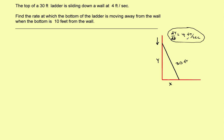The question is, what is the problem asking for? The question is asking for the rate at which the bottom of the ladder is moving away from the wall — that would be dx/dt, which is what we're solving for. A lot of times the hardest part of the problem is just drawing a picture and figuring out what you're solving for. I know the rate at which y is changing; I want to find the rate at which x is changing. So I've got to come up with an equation that ties y to x, and really the only equation you've got is the Pythagorean theorem.